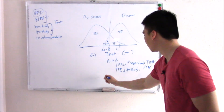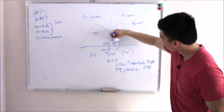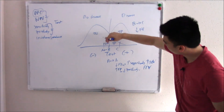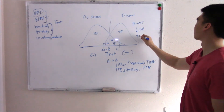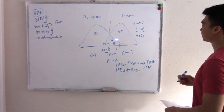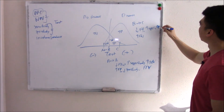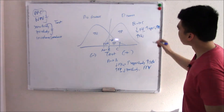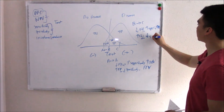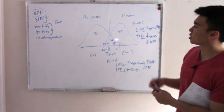When B moves to C — the line shifts the other way — it obliterates your false positives, so false positives go down, but it expands your false negatives. Decreased false positives means increased specificity and increased positive predictive value. Increased false negatives means decreased sensitivity and decreased negative predictive value. That's how they like to ask it.